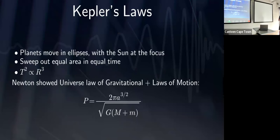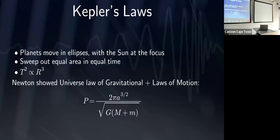Kepler used observations of the planets to work out his famous laws of motion: that planets move in ellipses, that they sweep out equal areas in equal times, and that the time to go around a star squared is proportional to distance from the star cubed. Newton came along sometime later and showed that his universal law of gravitation and laws of motion meant you could actually derive Kepler's laws if you were very good at mathematics.